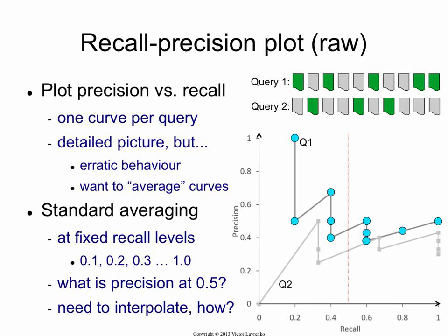Now there is a second ranking. That ranking is slightly different, but you can get a similar curve from it. The first document is non-relevant, so the first point is 0 recall, 0 precision. Then you get a relevant document, and this query only has three relevant documents, so recall jumps to 33% and precision jumps to 50% — because half the documents at rank 2 are relevant — and so on.